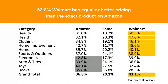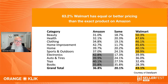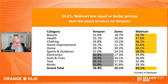Here are the categories. Data from DataSpark shows that Walmart actually has equal to or better pricing than Amazon in categories like beauty, health, clothing, home improvement, home, and sports and outdoors. So just keep that in mind.